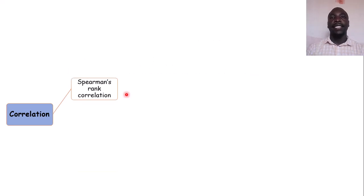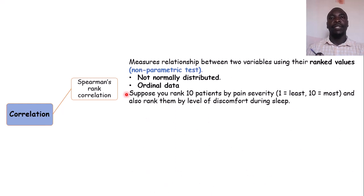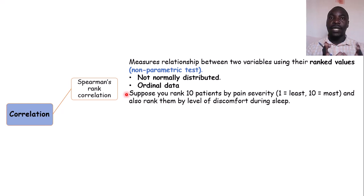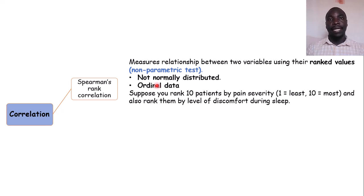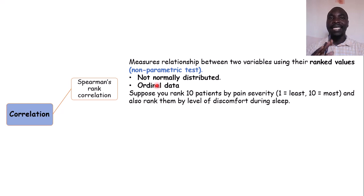Next, the Spearman's rank correlation coefficient measures the relationship between two variables using their ranked values. It is a non-parametric test and an alternative to Pearson's correlation when its assumptions have not been met — specifically, when data is not normally distributed, you use Spearman's rank correlation.